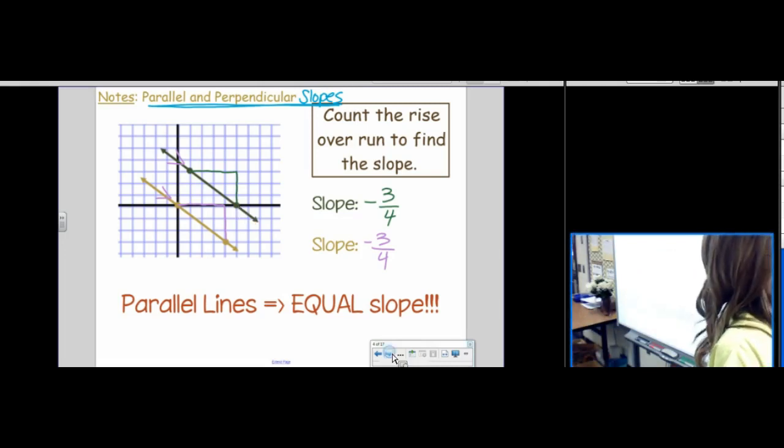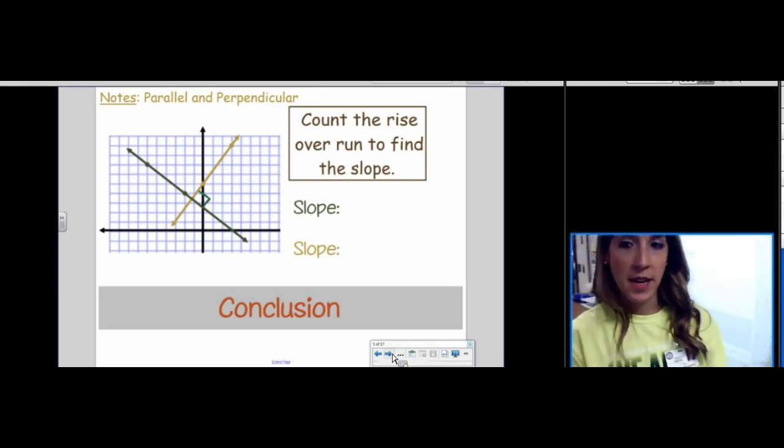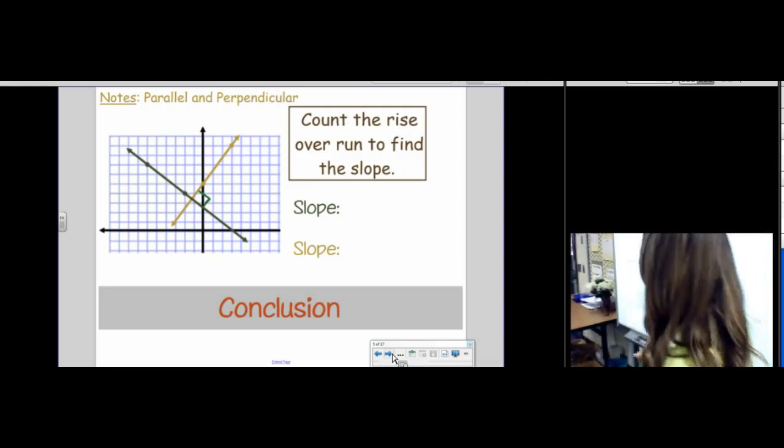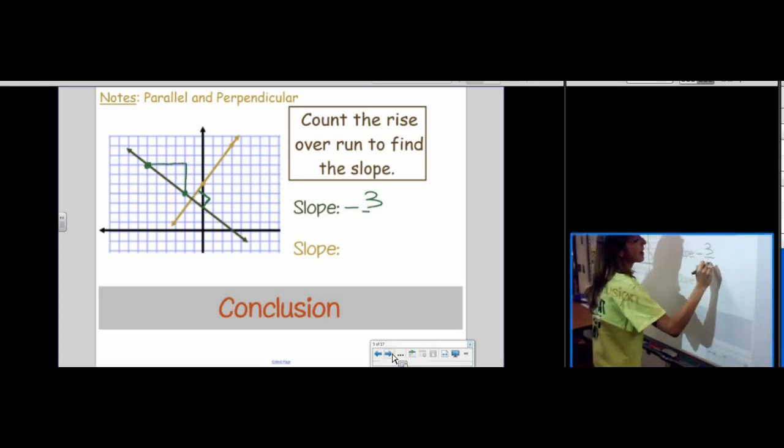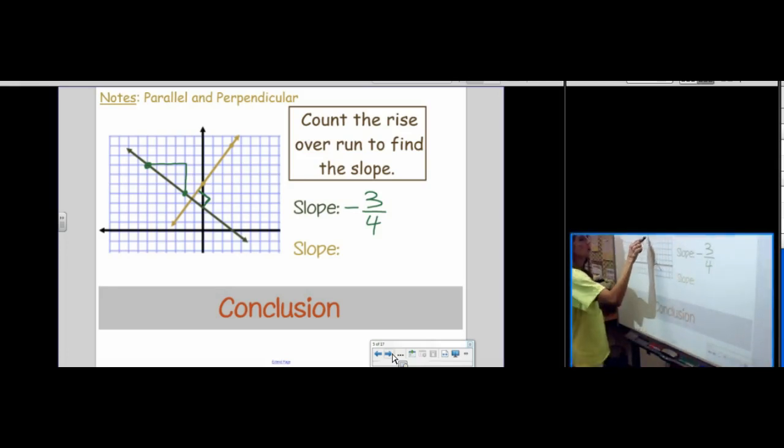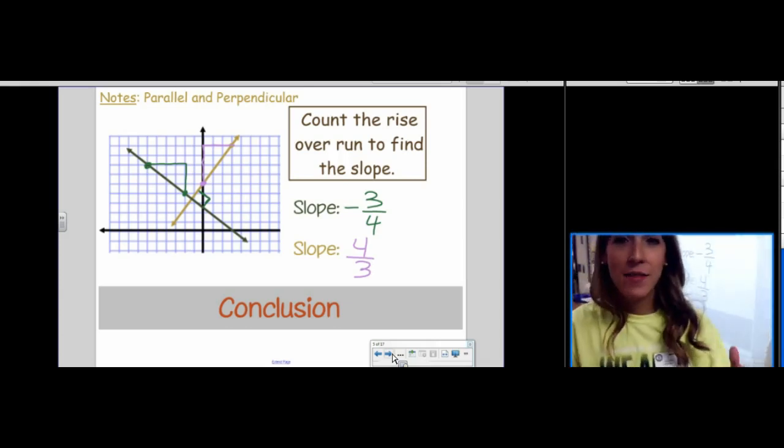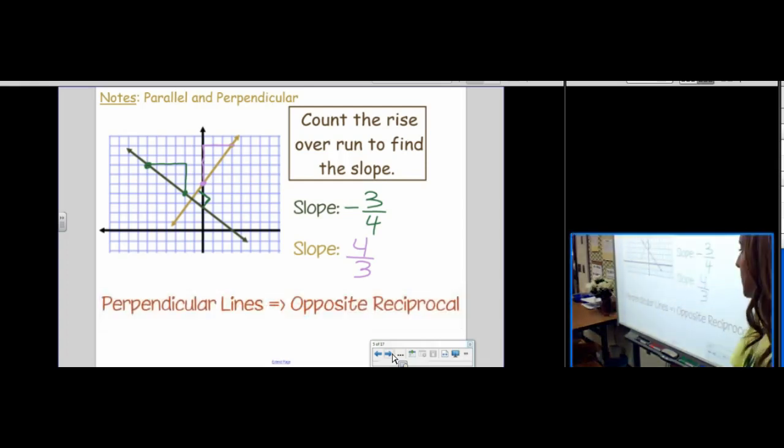Okay, looking at the next slide. I am telling you that these lines are for sure perpendicular. So we know these lines are perpendicular. Let's count their slopes and let's come to a conclusion about the slopes of perpendicular lines. Which we kind of already did. But we're going to do it officially. Rise 1, 2, 3. Run 1, 2, 3, 4. Same slope as the previous slide. Gold. Rise 1, 2, 3, 4. Run 1, 2, 3. So if all perpendicular lines behave the same way that these perpendicular lines behaved, then our conclusion is that perpendicular lines have opposite reciprocal slopes.